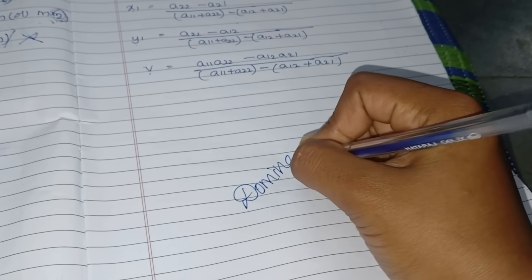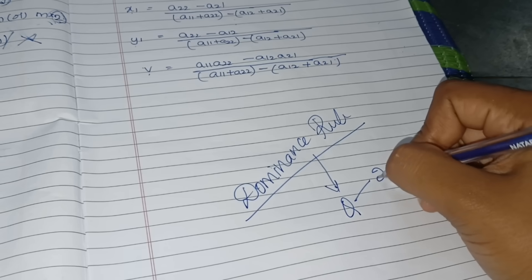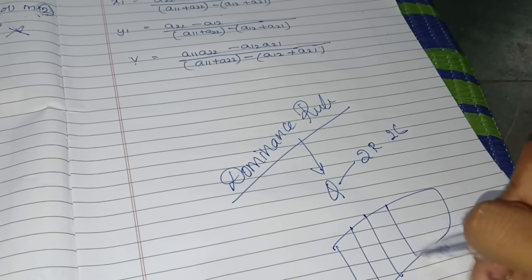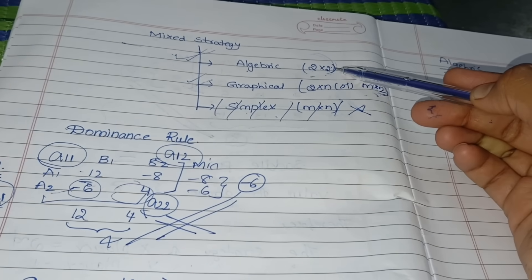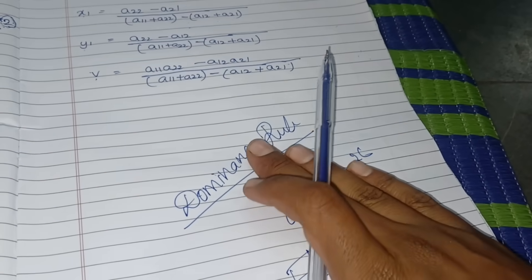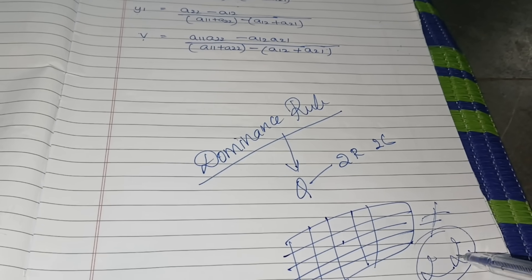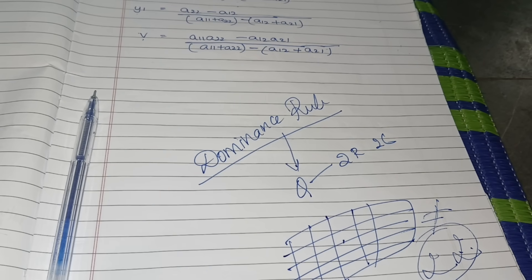Now I will explain the dominance rule. The dominance rule converts your question into two rows and two columns so you can then apply the algebraic method. For example, if you have five rows and five columns with no saddle point, you cannot directly use the algebraic method. The dominance rule reduces the matrix step by step until you have two rows and two columns.